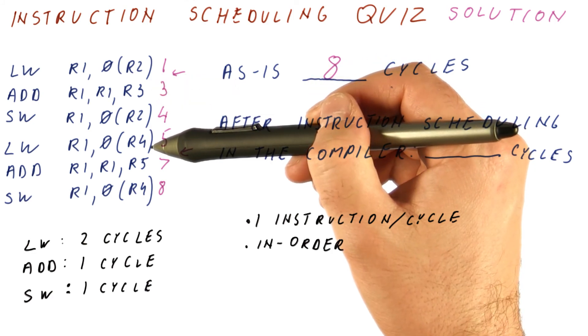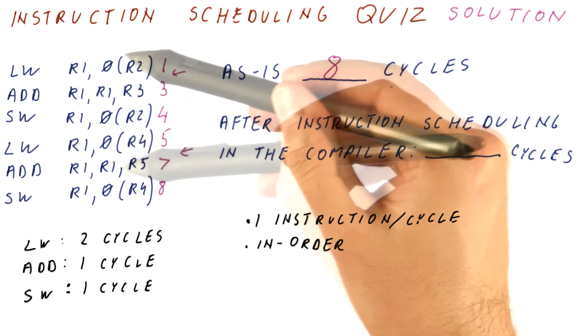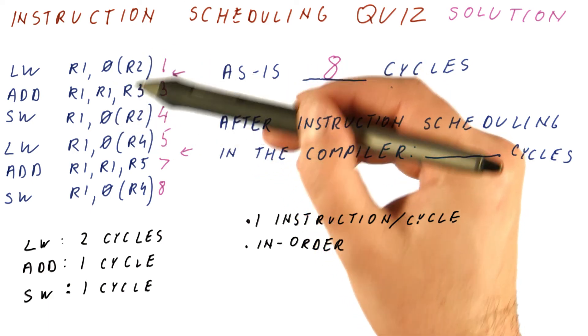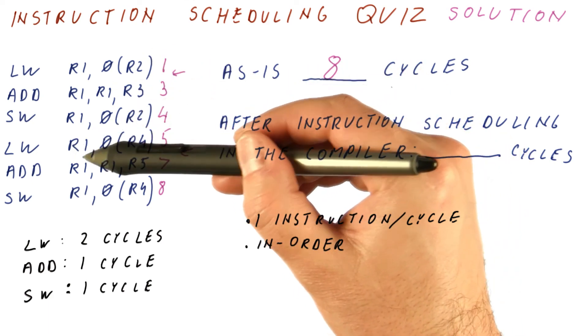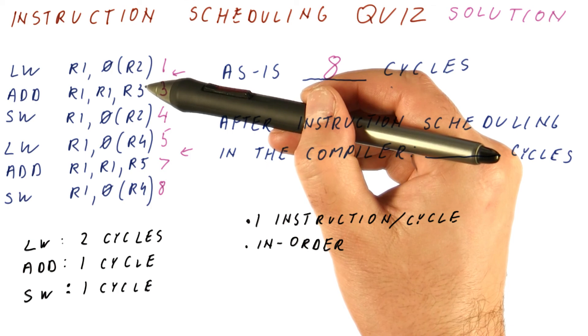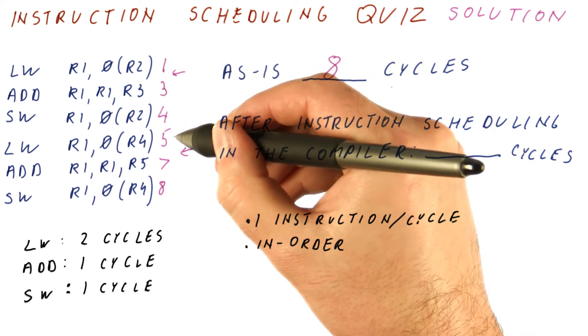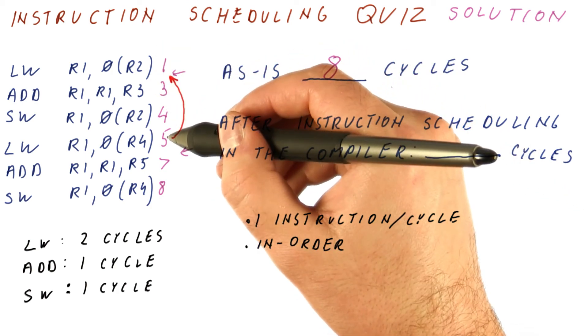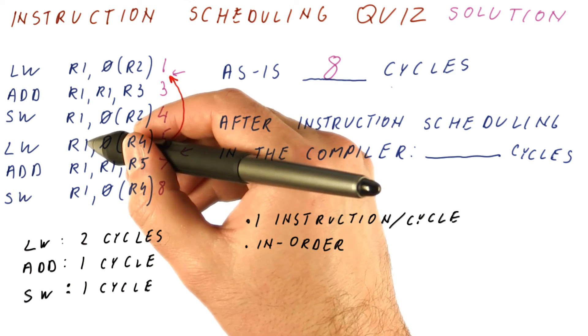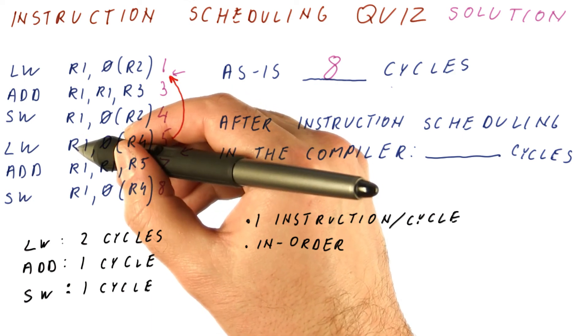We can see that this load here doesn't depend on any of the previous three instructions except that we will destroy R1 if we move that instruction here. So the correct solution is we will move the load there, but we will rename R1 into something else.